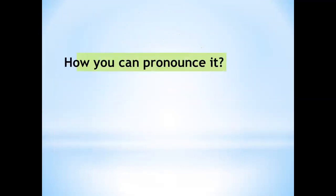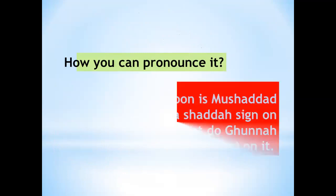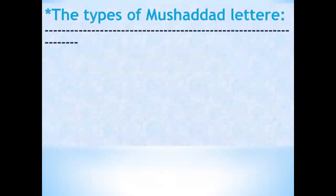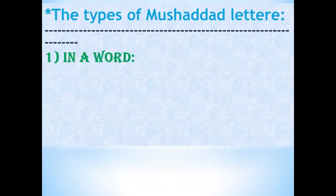How do you pronounce it? If a Mim or Noon is Mushadad — meaning it has a Shaddah sign on it — the reader must apply Ghunna, a nasal sound of two beats. There are two types of the Mushadad letter: in a word, and in two words.